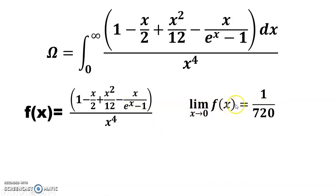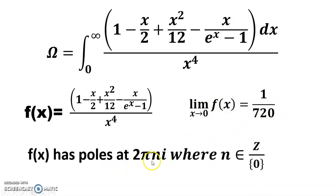And limit x tends to 0 of f(x) equals 1/720. And f(x) has poles at 2πni, where n belongs to Z minus {0}. Because e^x equals 1, so e^x minus 1 equals 0 when e^x equals 1. So x equals 2πni and minus 0, 0 is not included.